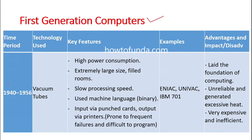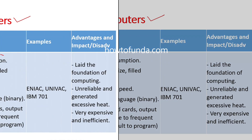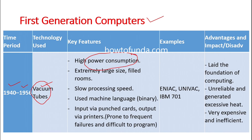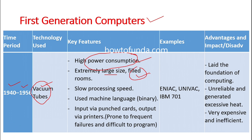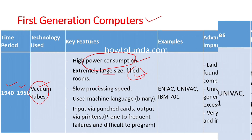Let us try to understand the first generation of computers. The first generation of computers is in the time period of 1940 to 1956. The technology being used is vacuum tubes. The key features are that it consumes high power and these vacuum tubes are extremely large in nature.